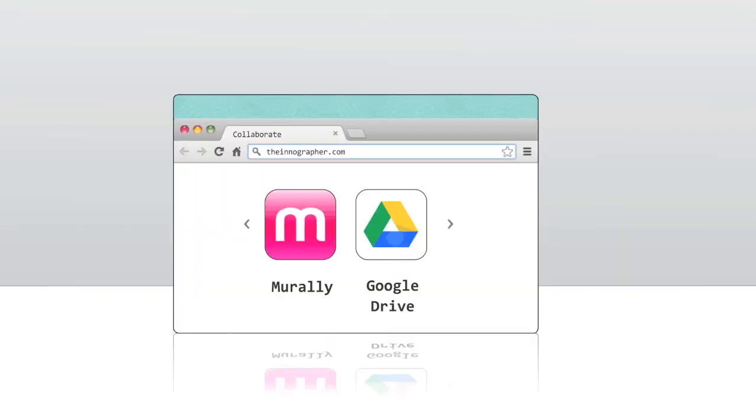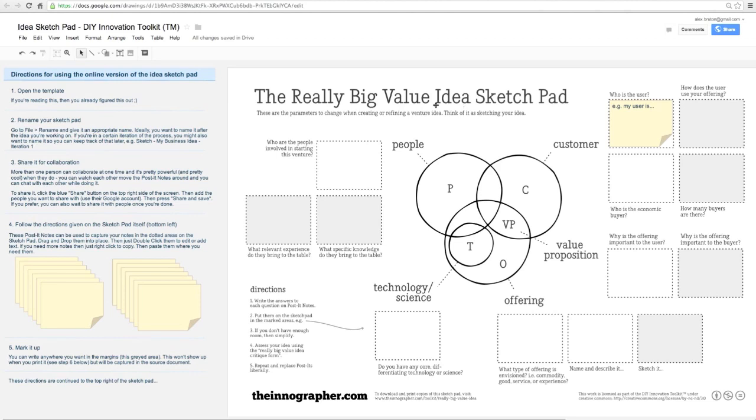Now, those are two examples of paper versions that you can have for free and download and print and all that. Here are two online versions, starting with Google Drive. This is a template in Google Drive that you can access. Here's an example.